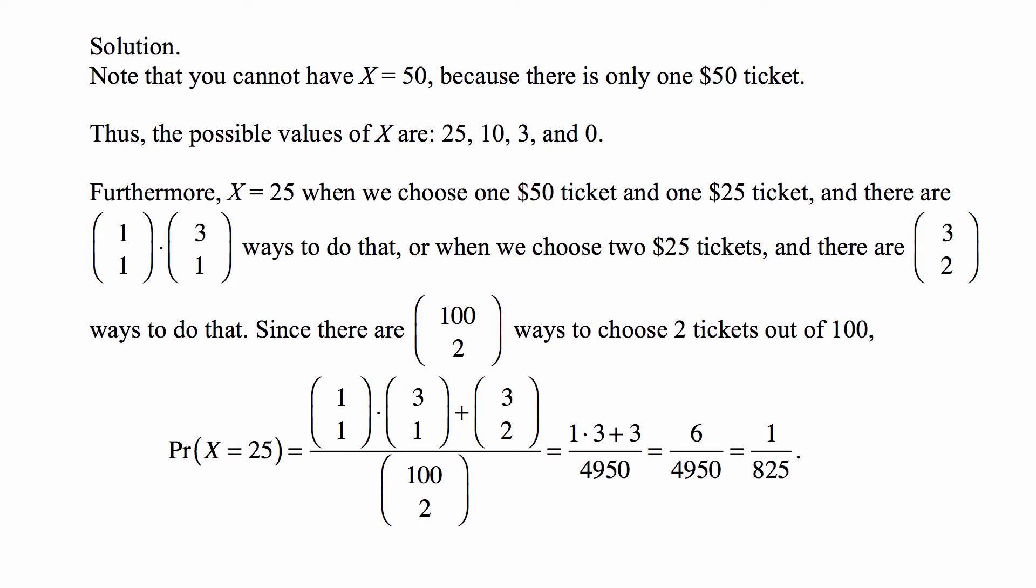When we choose two $25 tickets, we simply choose two out of three available, and there are three choose two ways to do this. The total number of ways to choose two tickets out of 100 is 100 choose two. So the probability of X equals 25 is one choose one times three choose one plus three choose two divided by 100 choose two. And we just calculate those. This ends up being 6 over 4950 or 1 over 825.